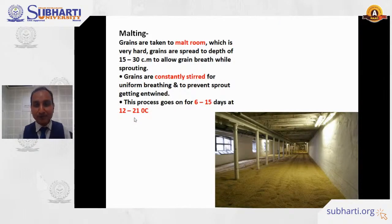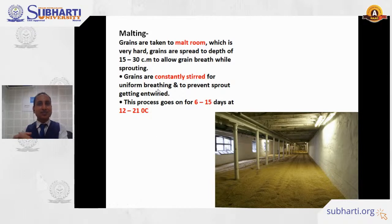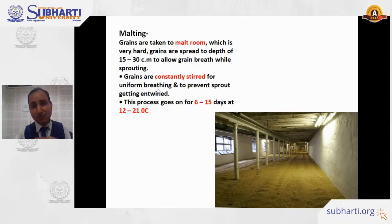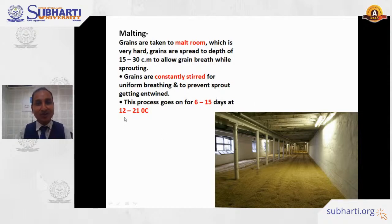The next step is malting. The steeped grains are taken out and spread onto the floor of a malt room. People use rakes and sticks to turn the grains up and down, ensuring air circulates inside. If this turning is not done properly, germination will be incomplete. This process takes around 6 to 15 days at a temperature of 12 to 21 degrees Celsius.